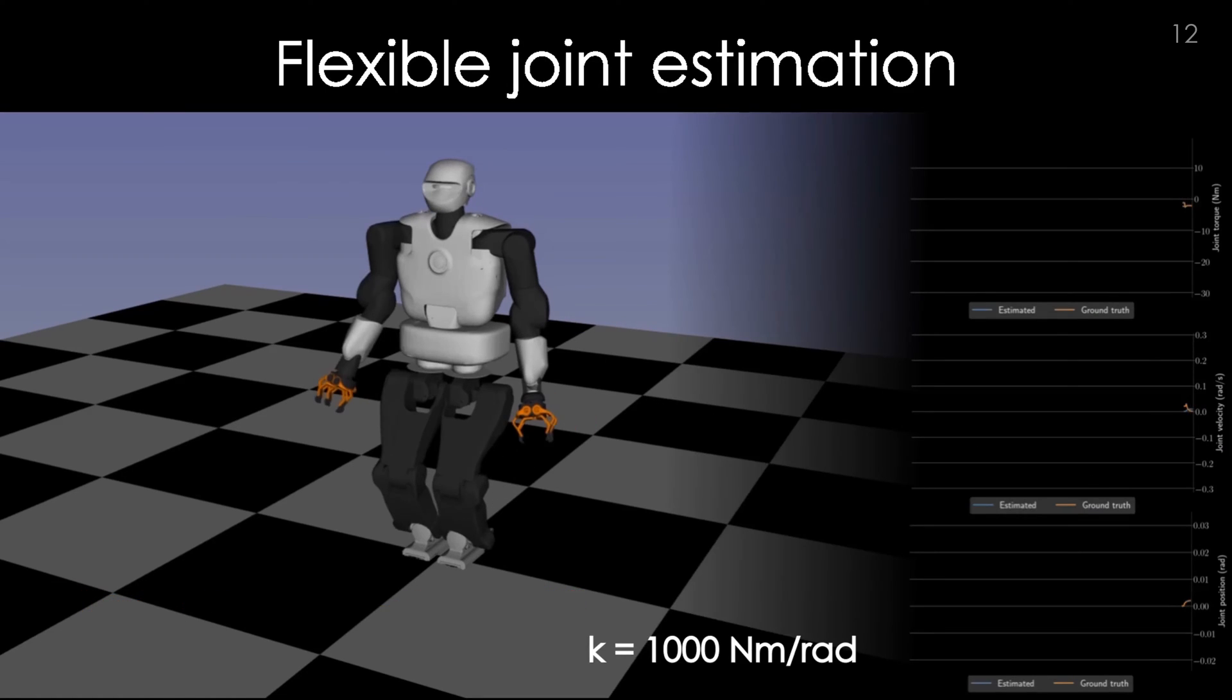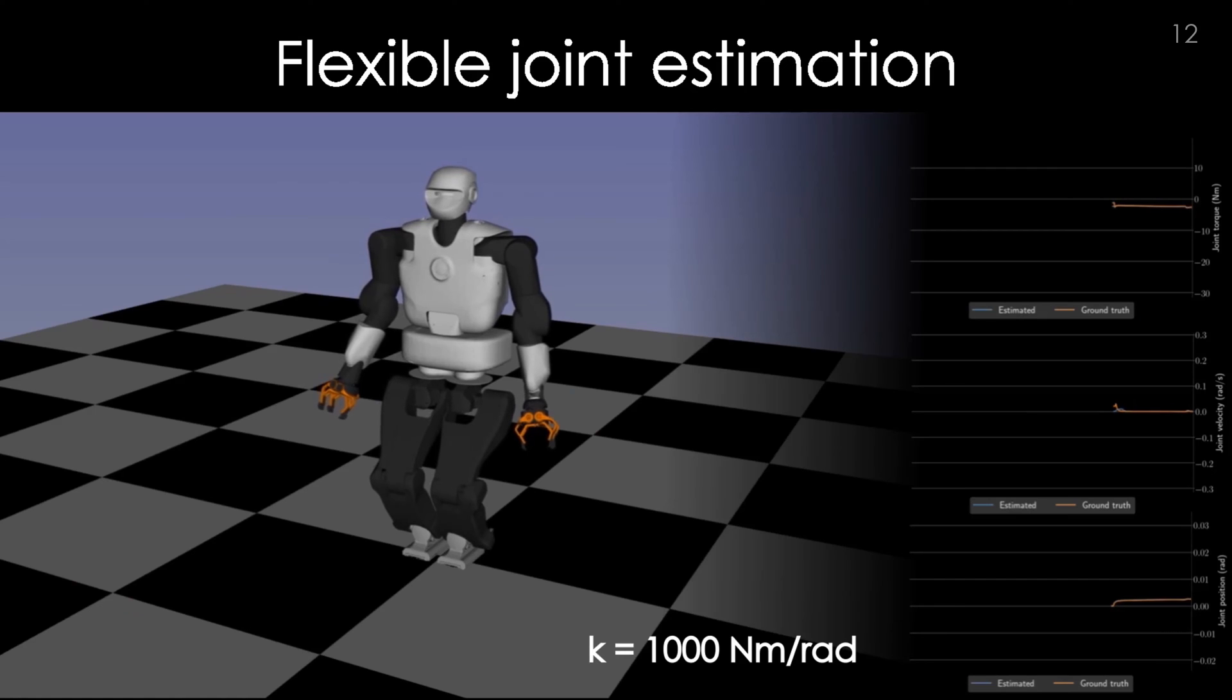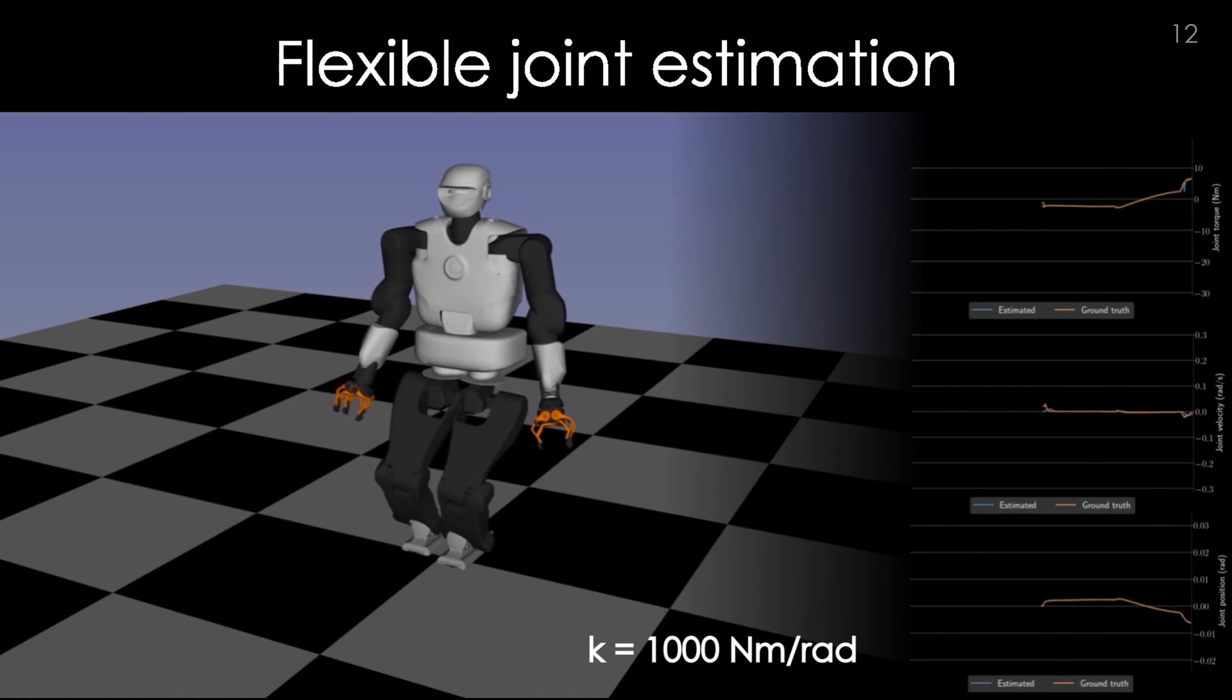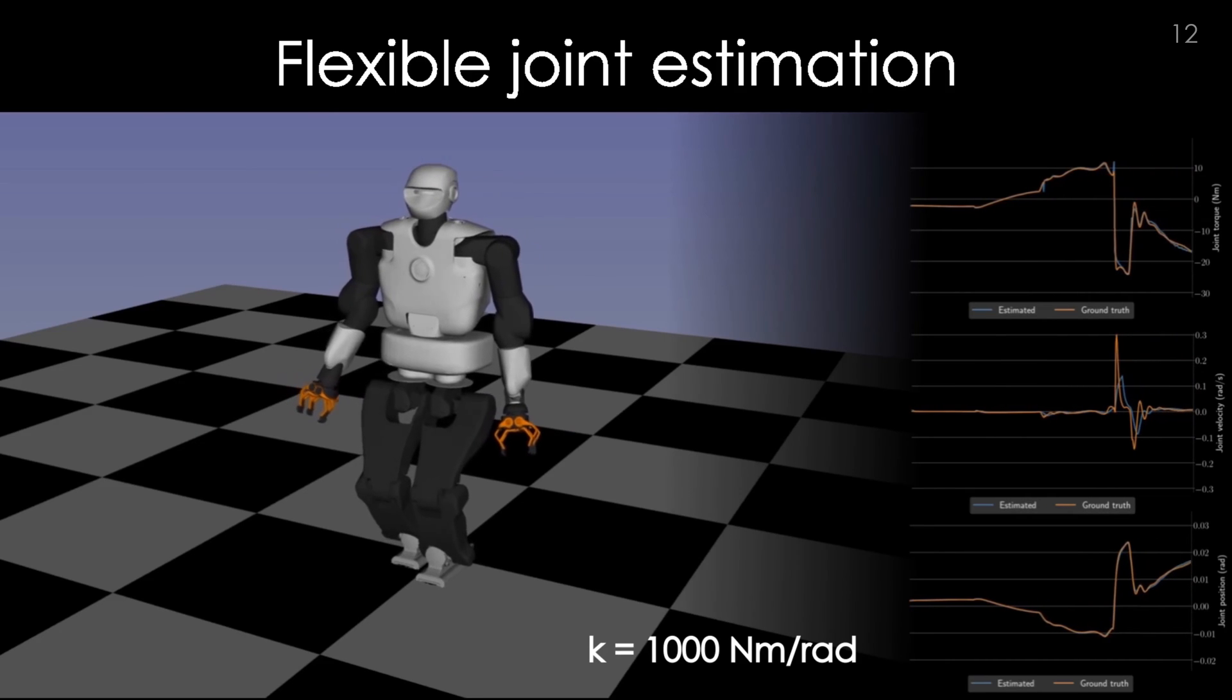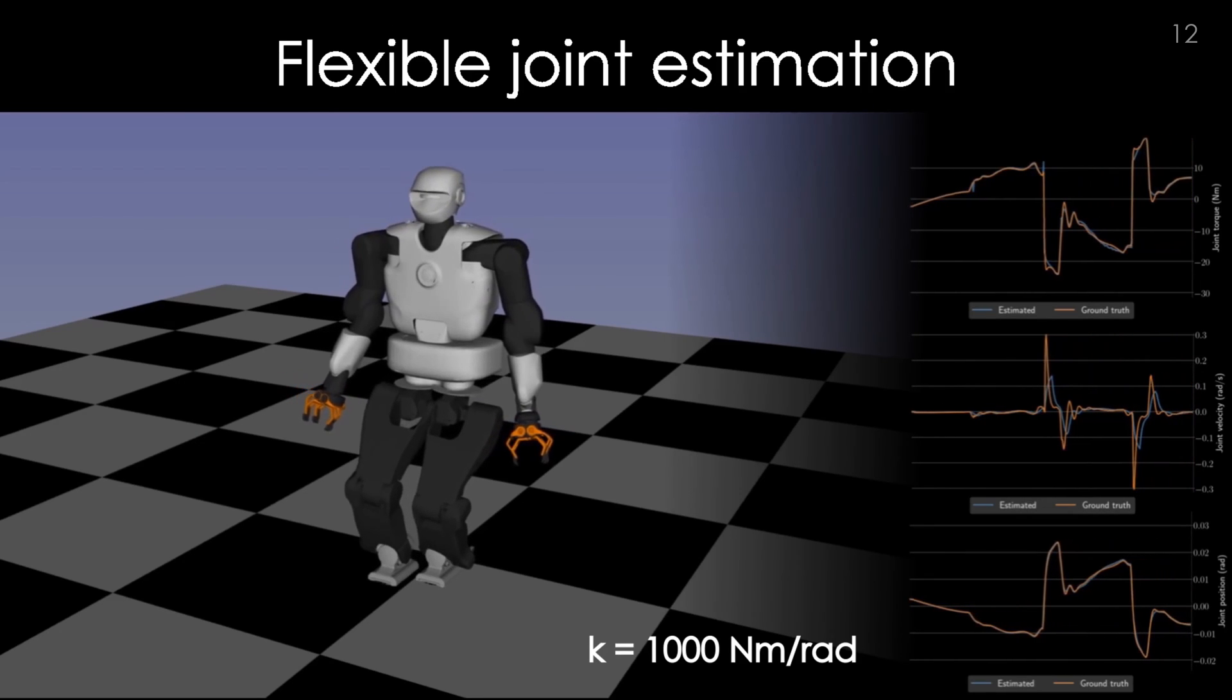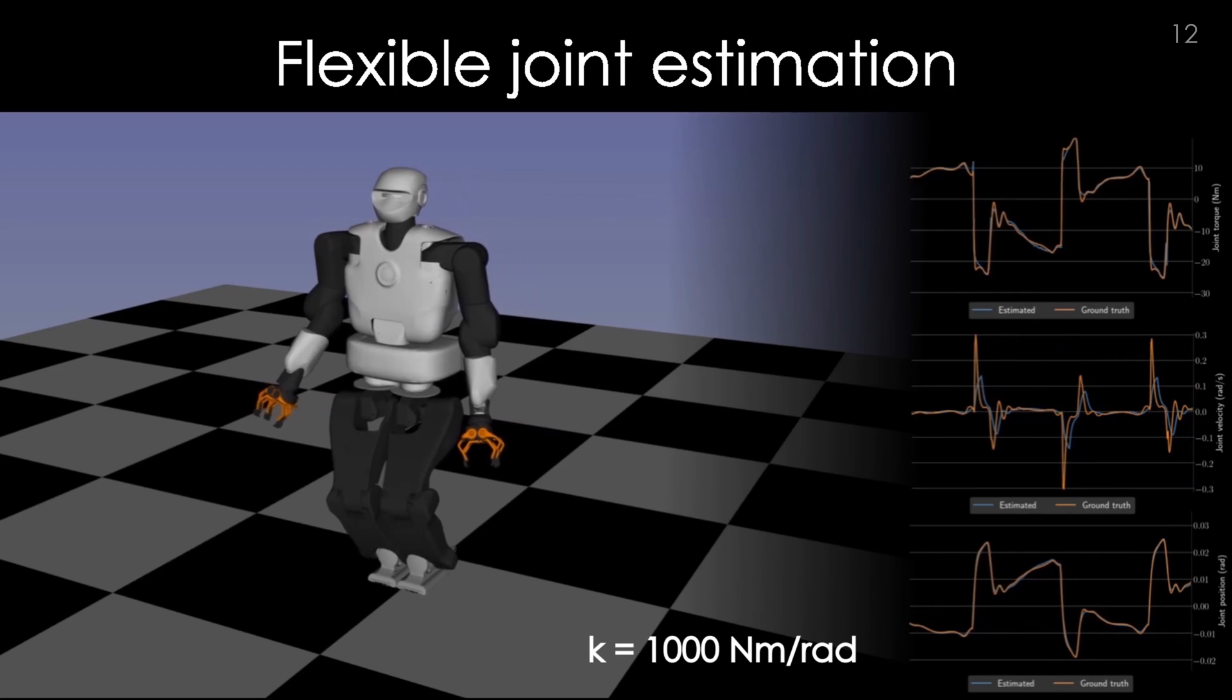We now present you the capabilities of the flexible joint estimator. On the right hand side, we show the plot of the estimated flexible joint position, velocity and torque, and the associated ground truth retrieved by the simulation.